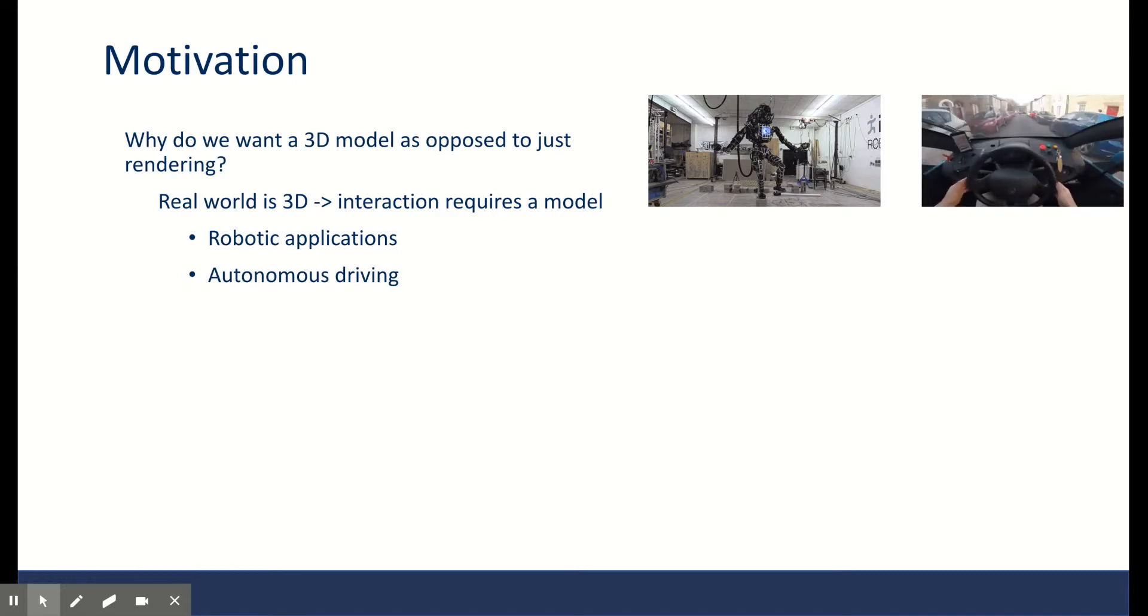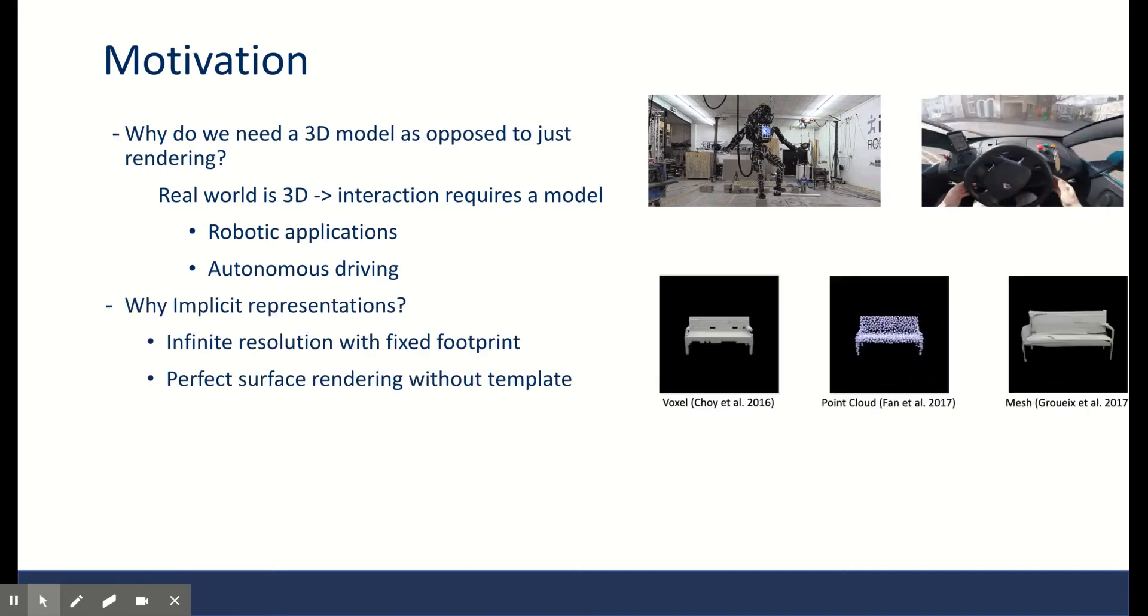Having a 3D model is crucial for many tasks that require interaction, like robotics and autonomous driving. That's the main motivation for why we want to learn a full 3D model. There are various methods for doing 3D modeling, including point clouds, voxels, and mesh.